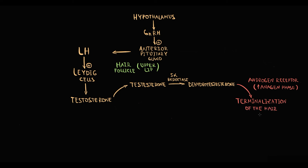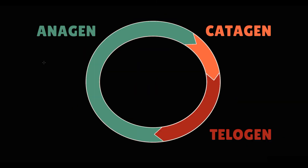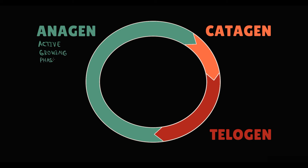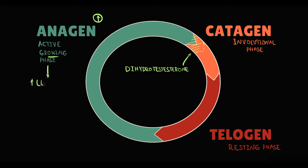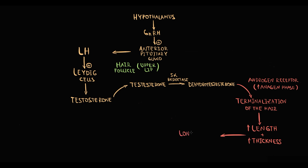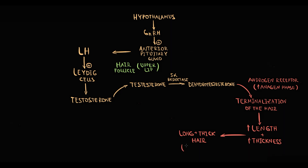Dihydrotestosterone acts on androgen receptors in the hair follicle and induces prolongation of the anagen phase, resulting in terminalization of the hair — a process where length and thickness increase. There are three phases of hair growth: the active growing phase (anagen), the involutional stage (catagen) where hair stops growing and shrinks, and the telogen phase where hair rests and is shed as new hair displaces it. Dihydrotestosterone prolongs anagen, resulting in longer, thicker hair — normal in men, but in women it is pathological.